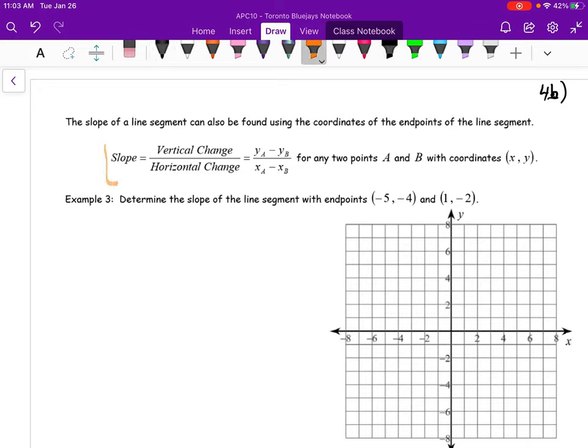If you want, we can utilize this formula. The vertical change is equal to yA minus yB divided by xA minus xB for any two points A, B with coordinates x, y.